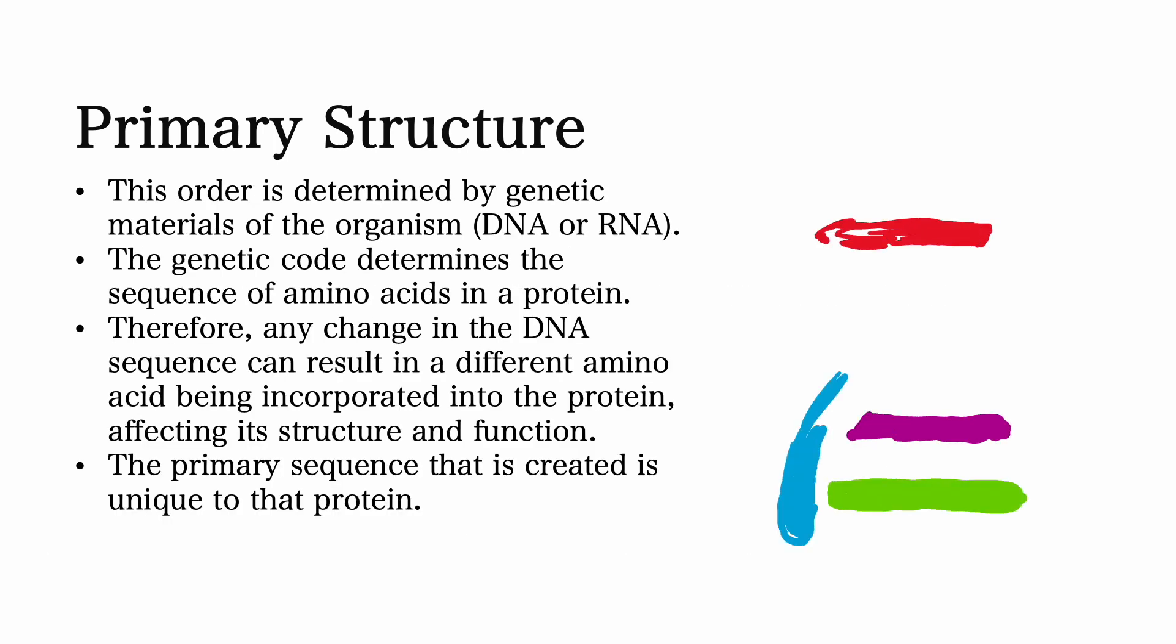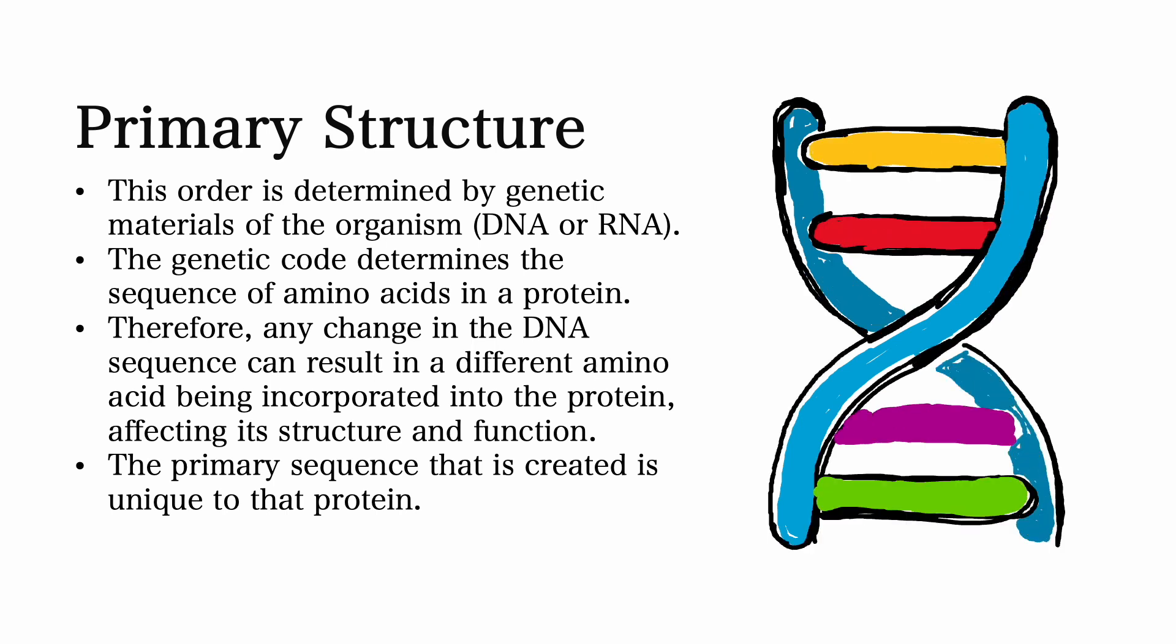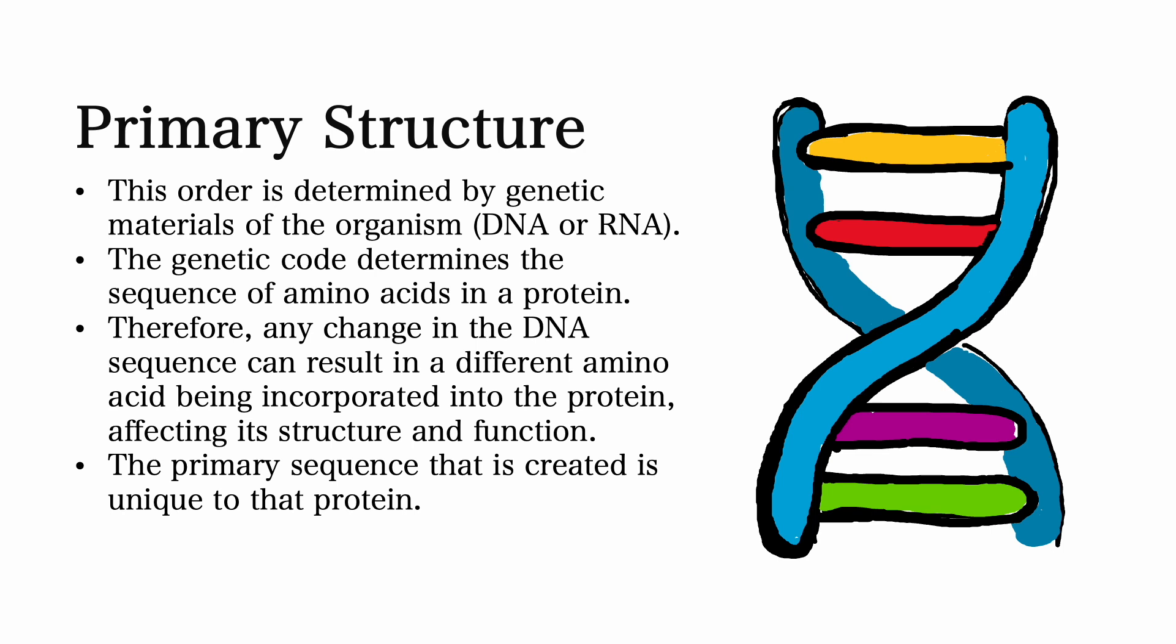This order is determined by the genetic material of an organism. This may be DNA or RNA. The genetic code determines the sequence of amino acids in a protein.